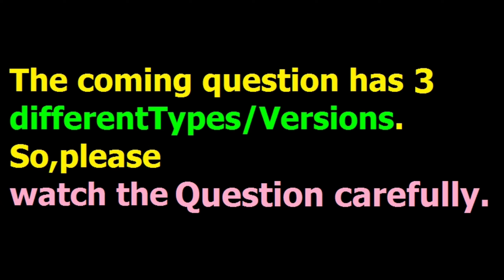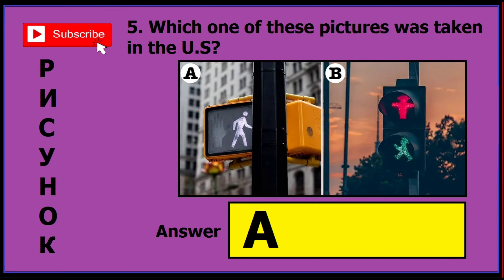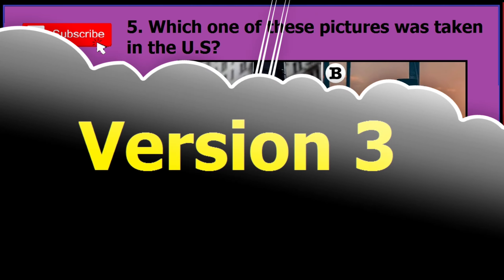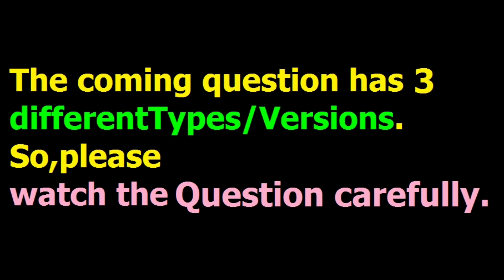This coming question has three different versions, so please read the question and watch the image carefully. In version one, if you find this sort of image and question, the correct answer is B. In version two, the correct answer is A. In version three, it is similar to version two but asks 'which of these pictures was not taken in the US?' — the correct answer is B.